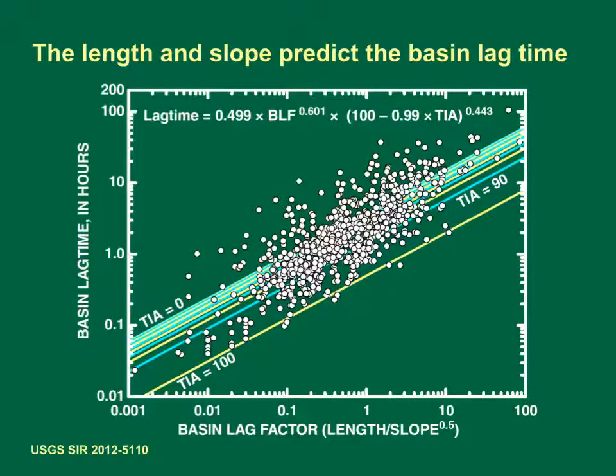The basin length and slope are good predictors for the basin lag time. This graph is a scatter plot showing the basin lag time data from 896 sites across the United States and regression equations developed using the basin lag time, the basin lag factor, and the total impervious area in percent measured at these sites. The vertical axis is the basin lag time in hours on a logarithmic scale. The horizontal axis is the basin lag factor, which is the basin length in miles divided by the square root of the basin slope in feet per mile, also on a logarithmic scale. This graph indicates that the basin lag time increases by a factor of 4 when the basin lag factor increases by an order of magnitude, and that increasing the total impervious area percentage from 0 to 100% reduces the basin lag time by a factor of 7.7 times.